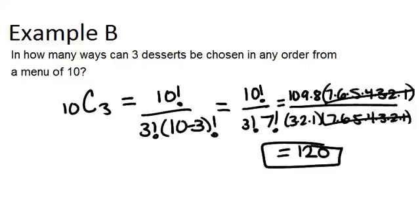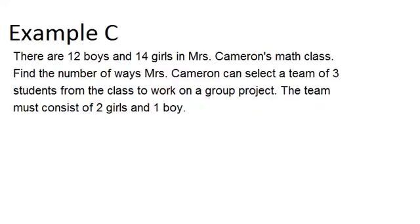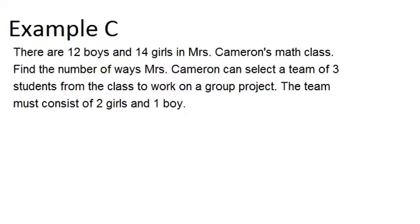Let's look at Example C. There are 12 boys and 14 girls in Mrs. Cameron's math class. Find the number of ways Mrs. Cameron can select a team of 3 students to work on a group project. The team must consist of 2 girls and 1 boy. For this problem we're going to think about it as two different pieces: first, choosing the 2 girls from the set of 14, and then choosing the 1 boy from the set of 12. We'll calculate the number of ways for each and then multiply them.